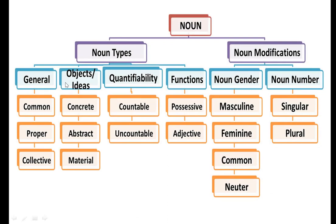Under noun types, we have four different subtypes: general, under which come common noun, proper noun, collective noun; objects and ideas, under which come concrete, abstract and material nouns; quantifiability, under which come countable and uncountable nouns; and functions, under which come possessive and adjectival nouns.